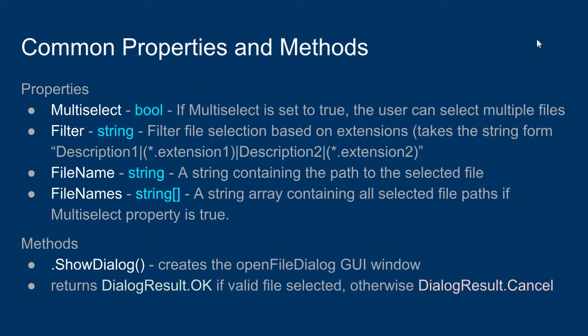Some common properties and methods of the Open File Dialog Control are as follows. There is a MultiSelect property that takes a Boolean value. If MultiSelect is set to true, the Open File Dialog will allow the user to select multiple files at once. If MultiSelect is set to false, the user can only select one file at a time.